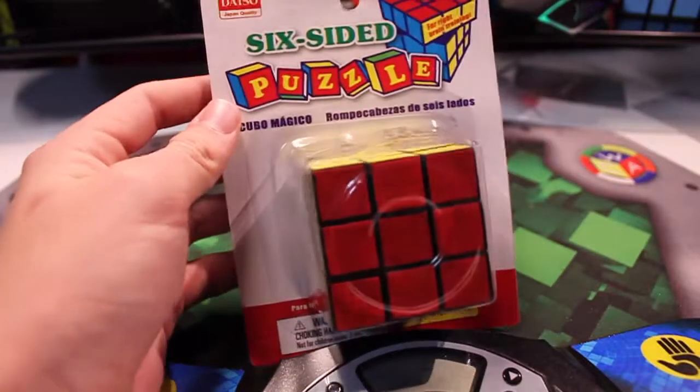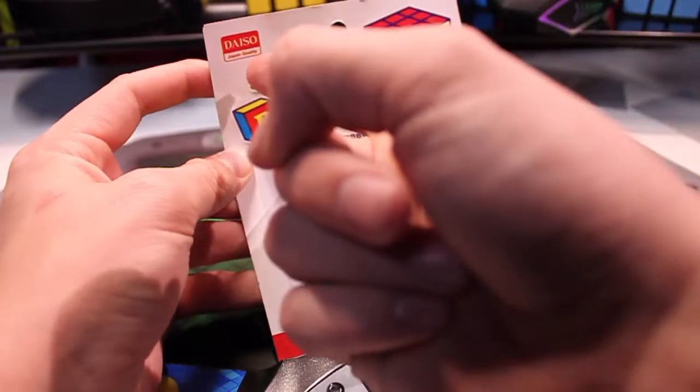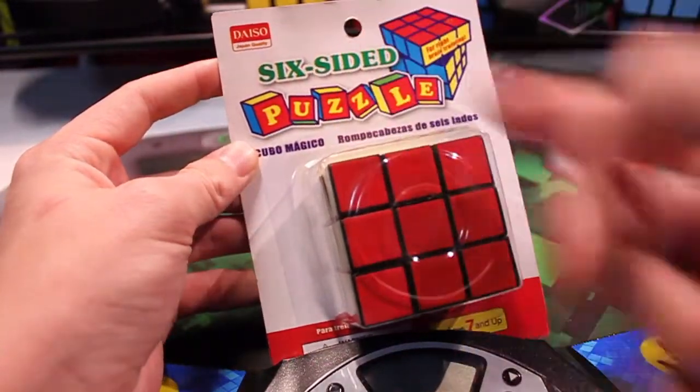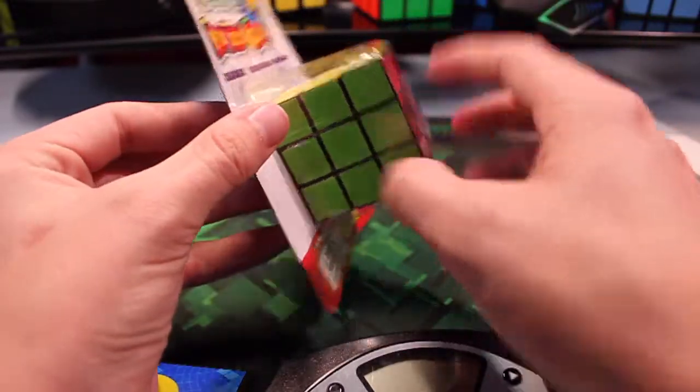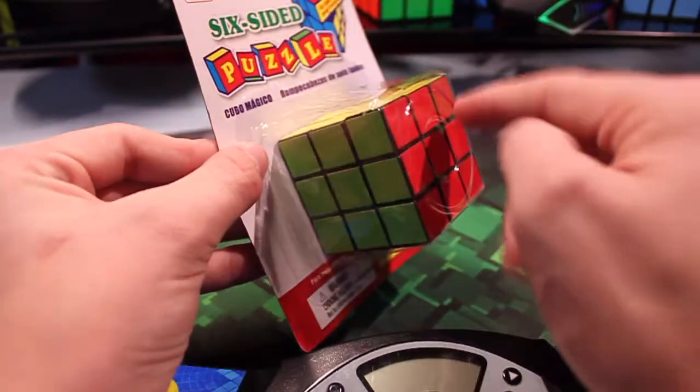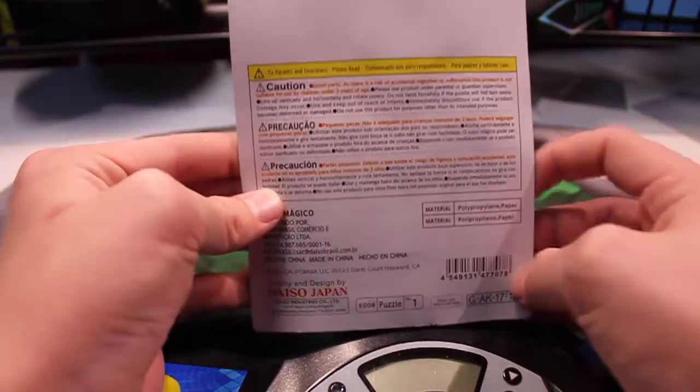Taking a look at the amazing quality box, you can see it says Deizo Japan Quality, Six Sided Puzzle for Right Brain Training. You can see that it's packaged in this little plastic with this weird circle in the front. Now on the back it just says some caution things.